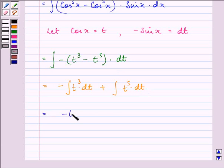That we have minus t raised to the power 4 divided by 4 plus t raised to the power 6 divided by 6 plus c. Now,